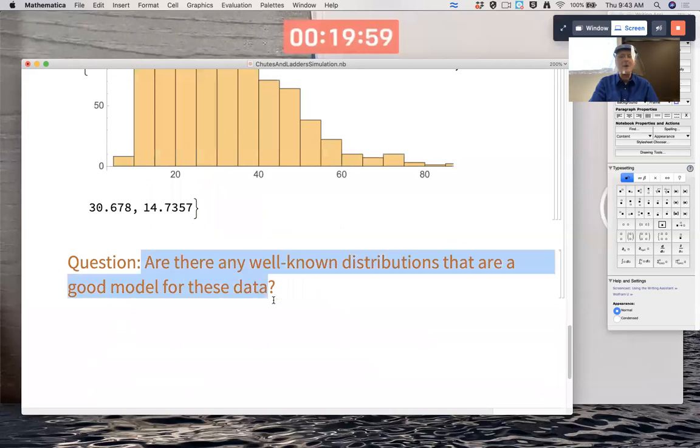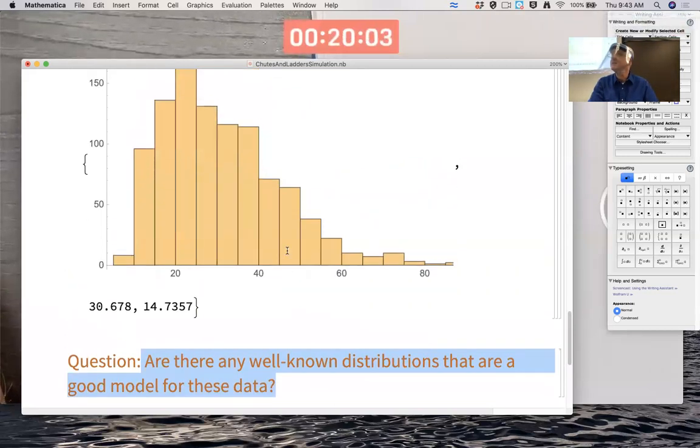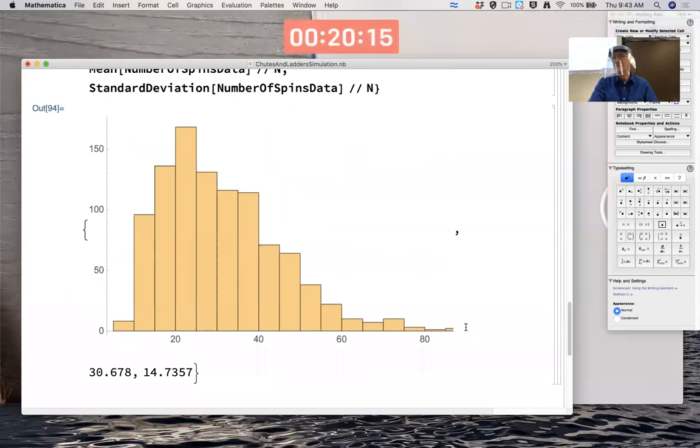Question. Are there any well-known distributions that are a good model? I don't know. I haven't tried. But you need a density function, a PDF that has a graph that goes up and then down about like that with a heavy right tail, a long right tail. Some sort of gamma distribution, perhaps, to make something to guess. As one possibility.